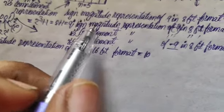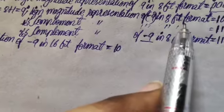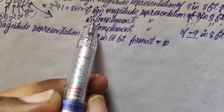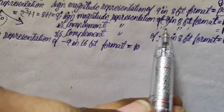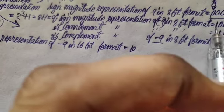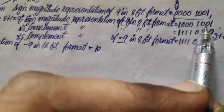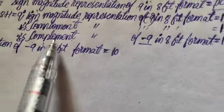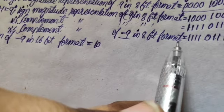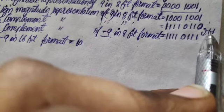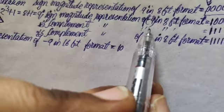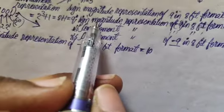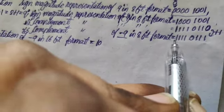In the previous video I talked about the sign-magnitude representation of minus 9 in 8-bit format. We found the ones' complement representation of minus 9 in 8-bit format, where the MSB bit does not change and all the rest of the bits change from 0 to 1 and 1 to 0. For the two's complement representation of minus 9 in 8-bit format, you simply need to add plus 1 to the ones' complement of minus 9 in 8-bit format.